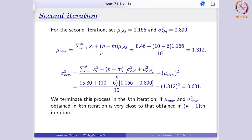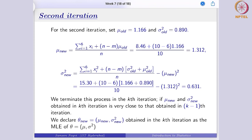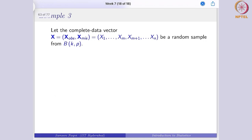This is how the EM algorithm for the normal distribution works. I have shown it here for the univariate setup; likewise it is more useful when you have a multivariate or multivariate normal distribution — in that case it is very much helpful. The second most common example we encounter is for the binomial distribution, and there we usually consider the multinomial distribution. Here we are considering the simpler binomial case so that you understand it clearly.